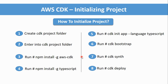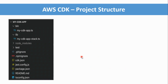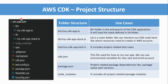Once you initialize the project, the folder structure will include a bin folder, a lib folder, a test folder, a cdk.json file, and a package.json file. The bin folder is the root of the project where you define the application name, and it loads the main lib folder configuration — the services you want to deploy are defined in the lib folder.